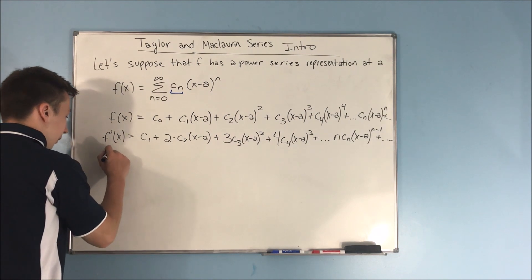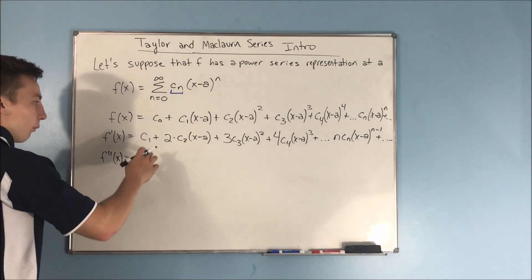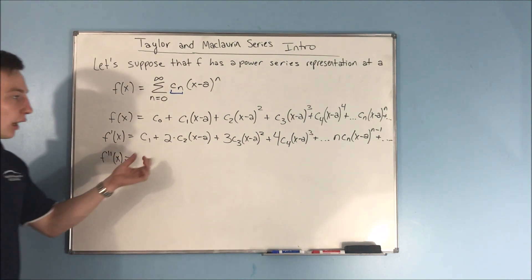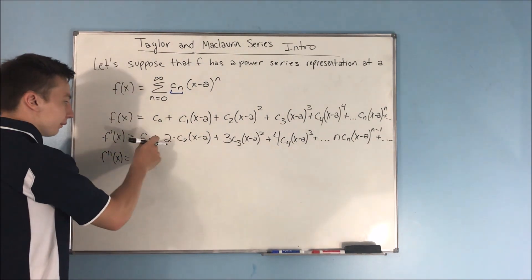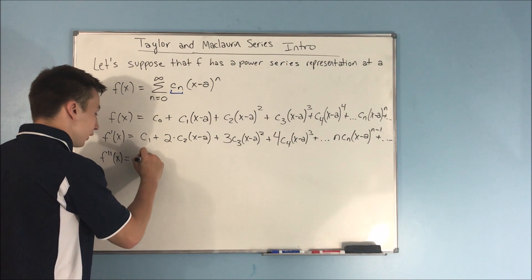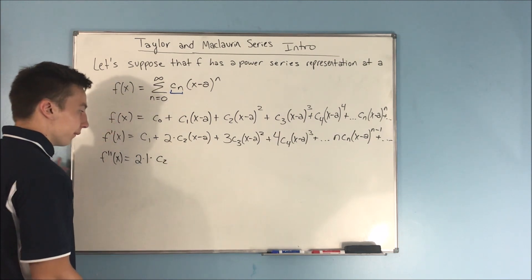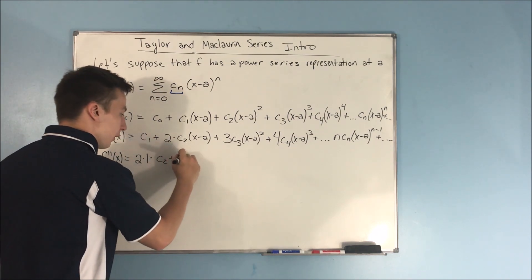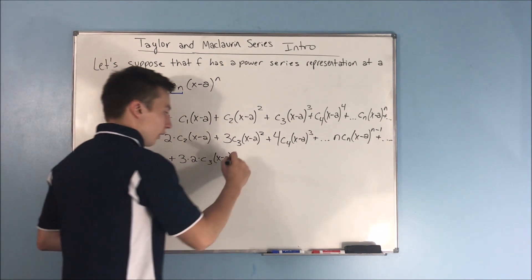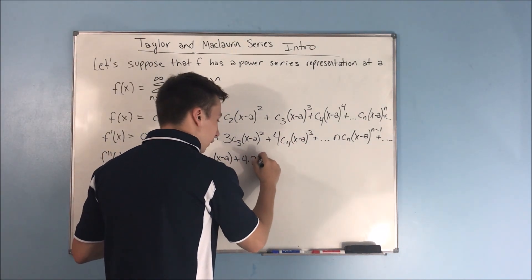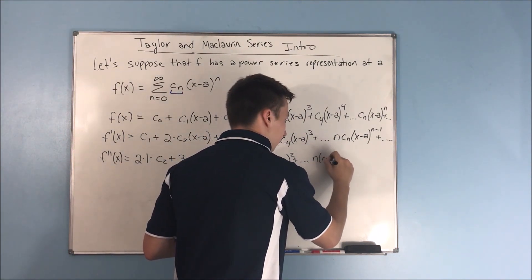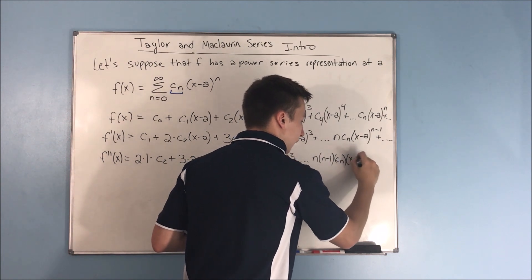Let's take another derivative — we're going to be taking a lot of derivatives. Here's our second derivative. We're going to try to see a pattern, because eventually we're going to describe our nth derivative. The c sub 1 obviously goes away, and the 2 is multiplied by the 1 in the exponent, so this is really 2 times 1 times c sub 2. Then we have 3 times 2 times c sub 3 times x minus a, plus 4 times 3 times c sub 4 times x minus a squared, plus n times n minus 1 times c sub n times x minus a to the n minus 2.